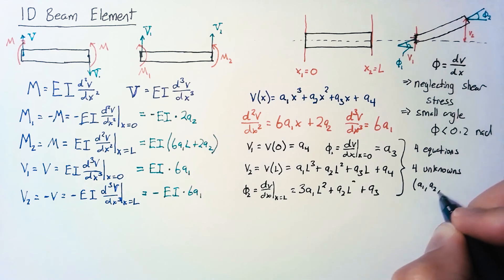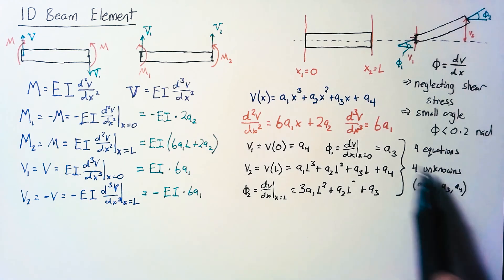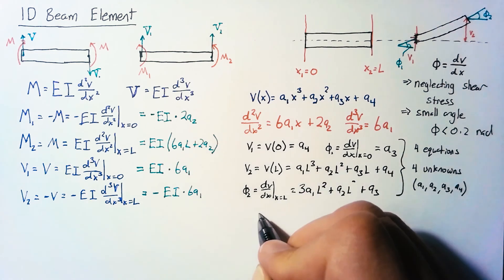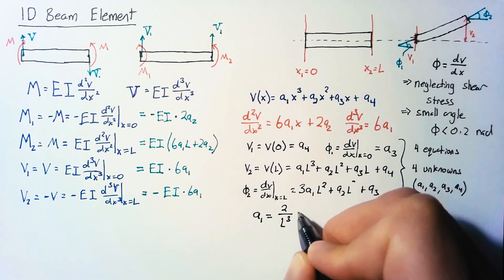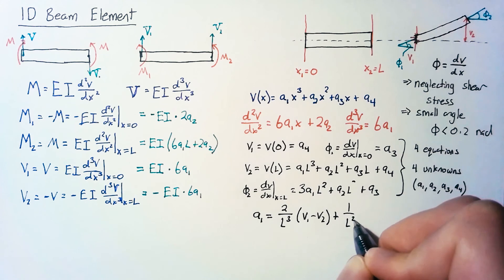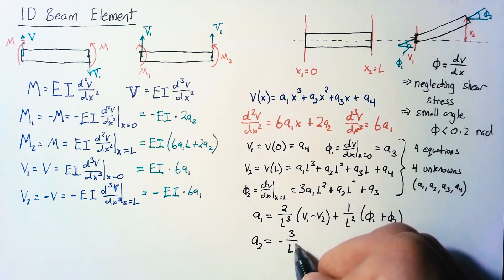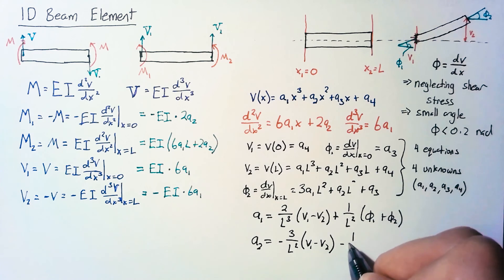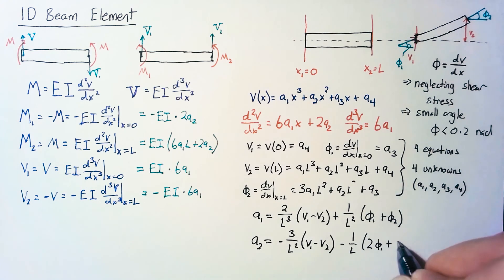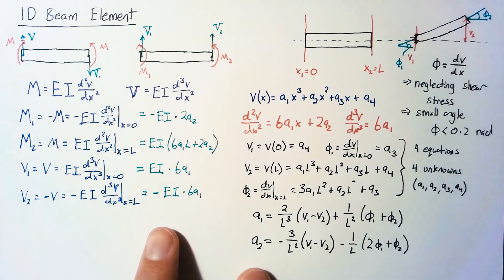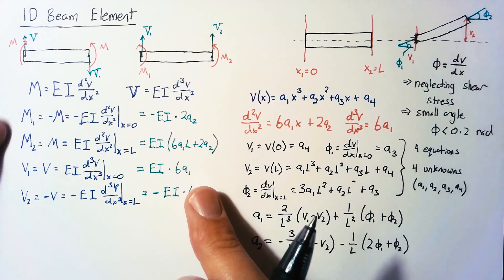Our unknowns are our a-values. Once we solve the system of equations, we get the a-values in terms of the four displacements. We already have a3 and a4. A1 is equal to (2/l³)(v1 − v2) + (1/l²)(phi1 + phi2). A2 is equal to (−3/l²)(v1 − v2) − (1/l)(2·phi1 + phi2). This is a simple enough system that you can get there by substitution.